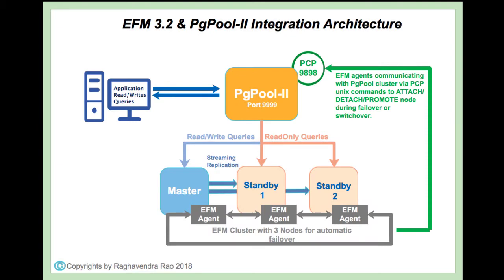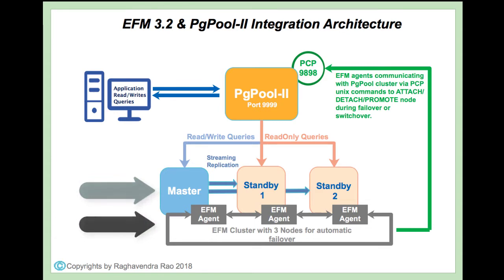Here's the high-level integration architecture. To implement, first we need to configure asynchronous streaming replication between one master and two standbys. Next, we need to configure EFM for automatic failover with one master and two standbys. We need to set the load balancer hook script in the EFM configuration file, which will execute PG Pool PCP commands to update database node status in the PG Pool cluster.